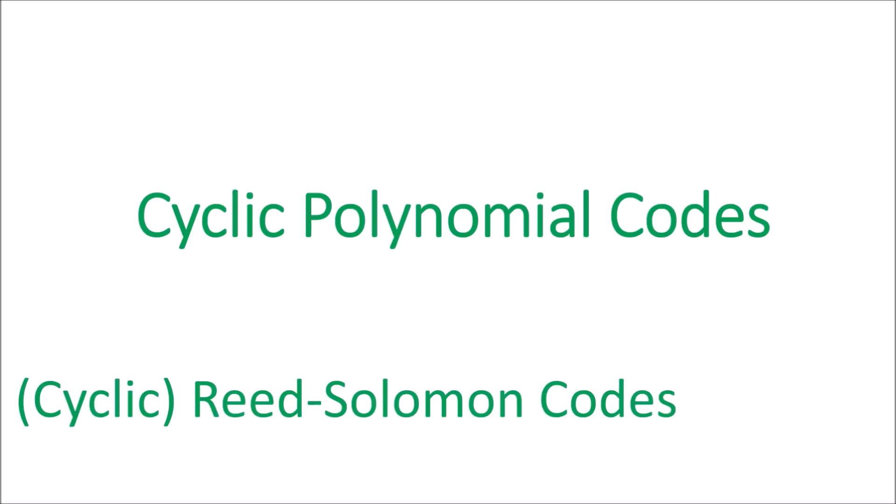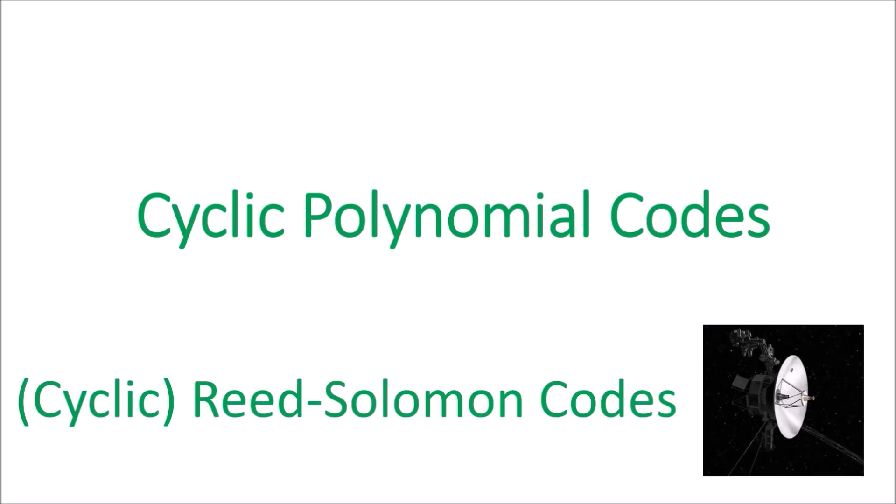In this video, I'm going to introduce cyclic polynomial codes. With polynomial codes, instead of thinking of messages and codewords as vectors, we instead think of them as polynomials. The Reed-Solomon codes used by the Voyager probes to send images of the solar system back to Earth are a special case of cyclic polynomial codes.